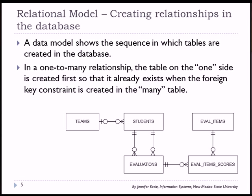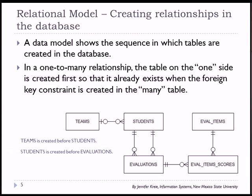When you run the scripts — and I actually have a video for installing the Student Teams database — if you look at the scripts, you'll see that you have to build the tables in a particular order. Some things must be built before other things can be built. For example, you must have a teams table in place before you add the students table because of the dependency: students gets the foreign key related to teams, so teams has to be built first. Teams is created before students, students before evaluations, and then eval items and evaluations are both built before we build eval item scores.